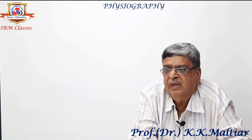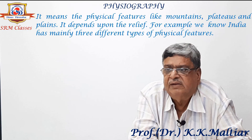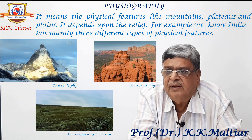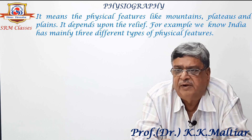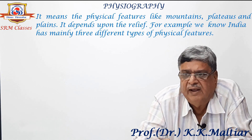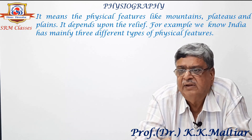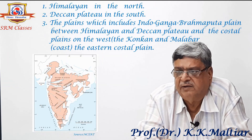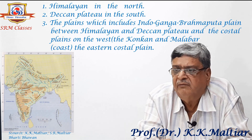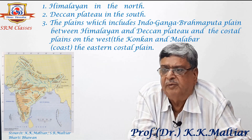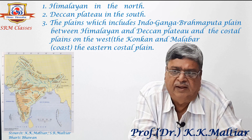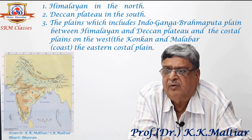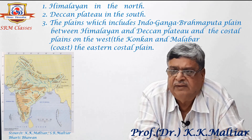Now I come to physiography. It means the physical features like mountains, plateaus and plains. It depends upon the relief. For example, we know India has mainly three different types of physical features: number one, the Himalayas in the north; number two, the Deccan plateau in the south; and number three, the plains which include the Indo-Ganga-Brahmaputra plain between the Himalayas and the Deccan plateau, and the coastal plains on the west comprising the Konkan and the Malabar coast, and the eastern coastal plain.